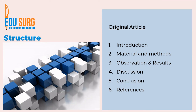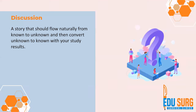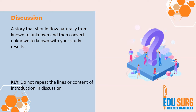Let us start with discussion. What is discussion? Basically it is a story in your article that should flow naturally from known to unknown. If your topic is, say, surgery for acute necrotizing pancreatitis, you can start with what is known about the topic and then go towards the unknown that your study is trying to show, and convert the unknown to known with your study results. If you understand this line, it is very easy to write the discussion.